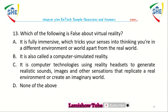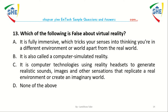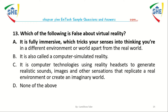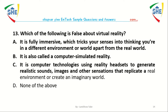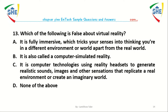Question number 13: Which one of the following is false about virtual reality? A) It is fully immersive which tricks your senses into thinking you are in a different environment or world apart from the real world. B) It is also computer-generated or computer-simulated reality. C) It uses reality headsets to generate realistic sounds, images, and other sensations that replicate real environments or create imaginary worlds. D) None of the above.